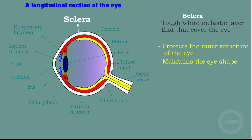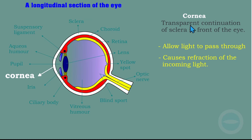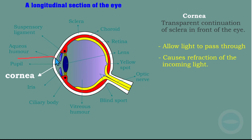The next part is the cornea. The cornea is a transparent continuation of the sclera in front of the eye. The sclera is the white part, but from a certain point the part becomes transparent and is called the cornea. The functions of the cornea: it allows light to pass through and enter the eye, and it causes refraction of the incoming light — meaning it bends the light so it can enter the eye properly.